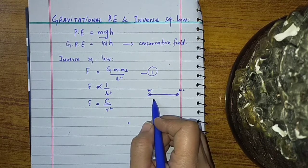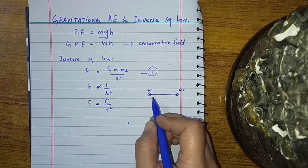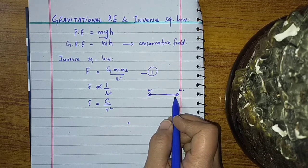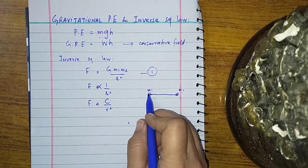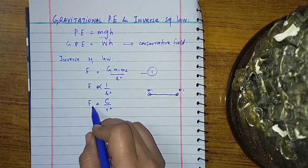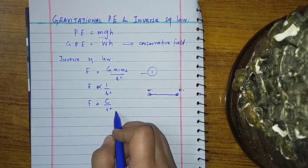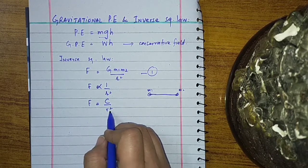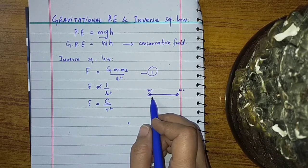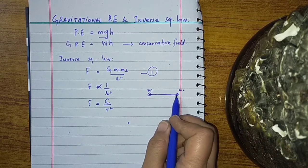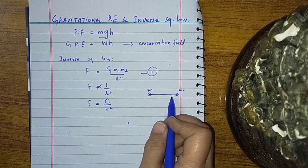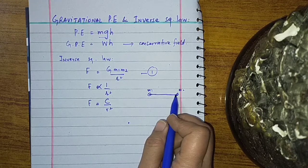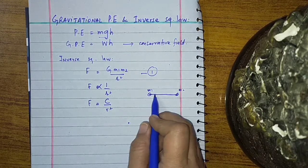Why is it called a central force? Because this force acts from the center of the first particle to the center of the second, or from the center of the second to the center of the first. That is why it is called the central force, and it is inversely proportional to the square of the distance between the centers, along the line joining them.